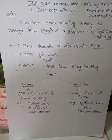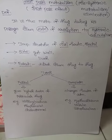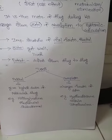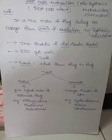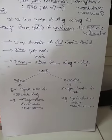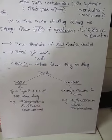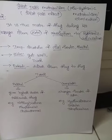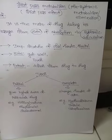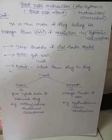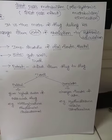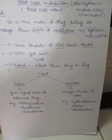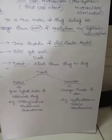First pass effect is the metabolism of a drug during its passage from the site of absorption to the systemic circulation — that means metabolism of the drug before it takes action. It gets inactivated before it reaches the systemic circulation. This is an important feature of the oral route of drug administration and is sometimes seen with the rectal route as well.